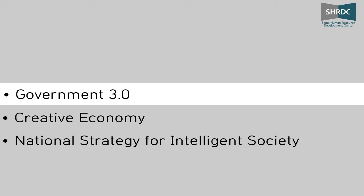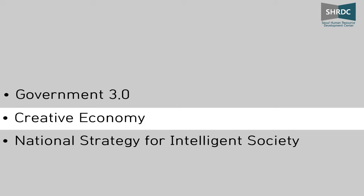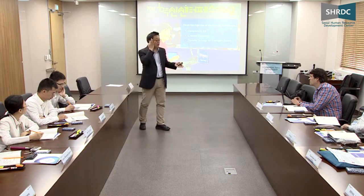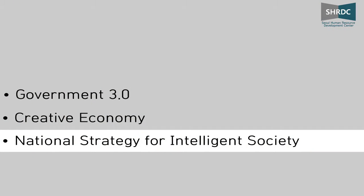In the IT sector, we can identify three big agendas. One is Government 3.0, today's issue. The second one is the creative economy, whose main goal is to change from a manufacturing-based economy to a knowledge sector-based economy. One of the key programs is to encourage young people to start technology-driven businesses. The third one is the national strategy for intelligent society.